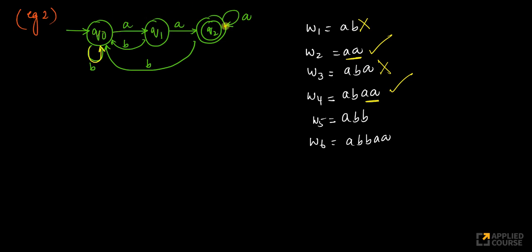If I get two a's and more a's, I stay in q2. But the moment I get a b, I come back. So q1 basically symbolizes that I have encountered a b. This state emphasizes that I've encountered one a. But after one a, if I get b, I go back. Only if you get one more a after one a, you'll reach the final state. So 'a, b, b' is not accepted. 'a, b, b, a, a' — accepted.